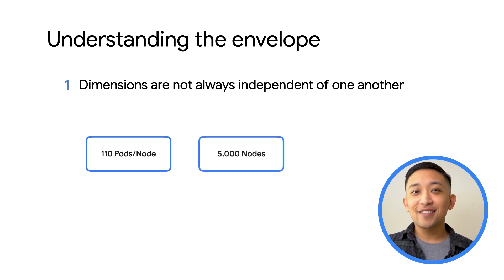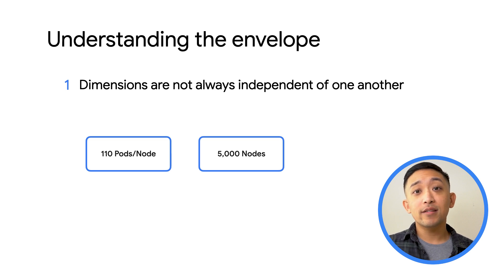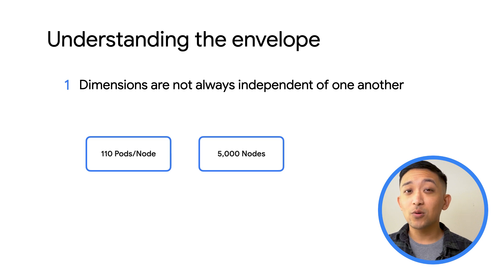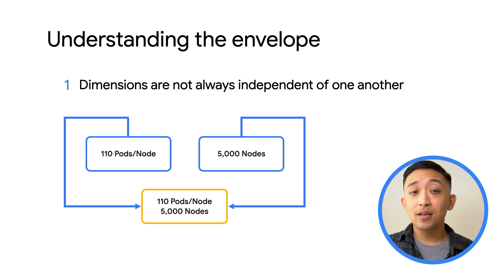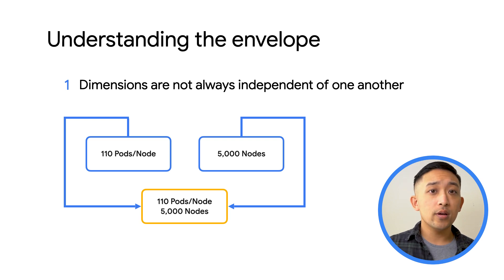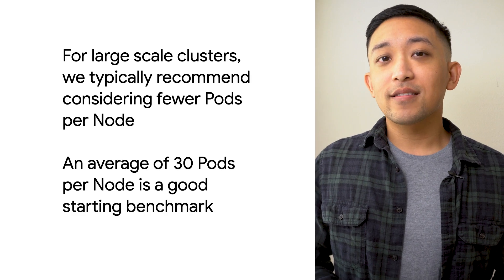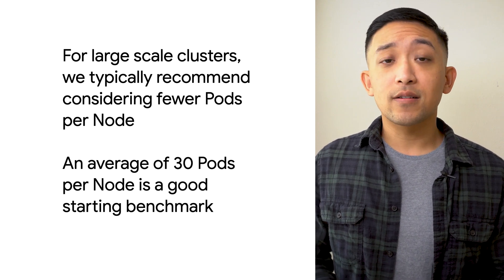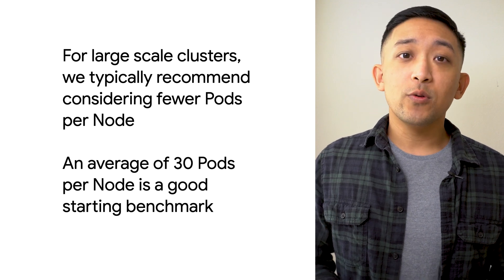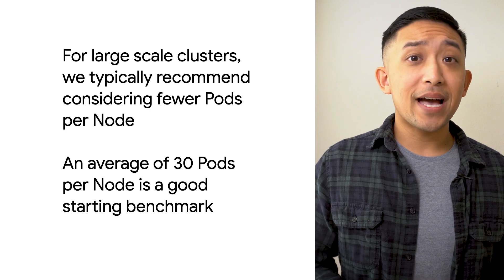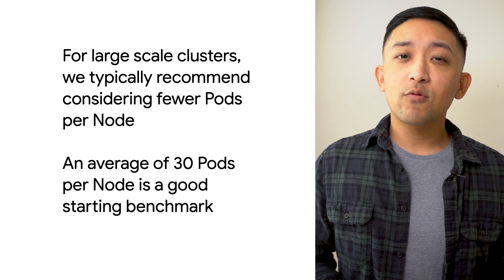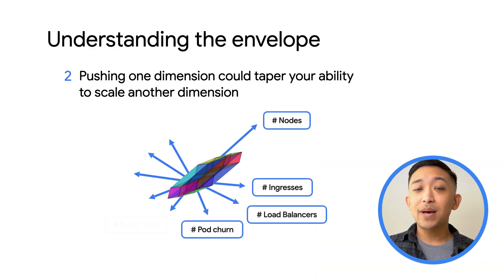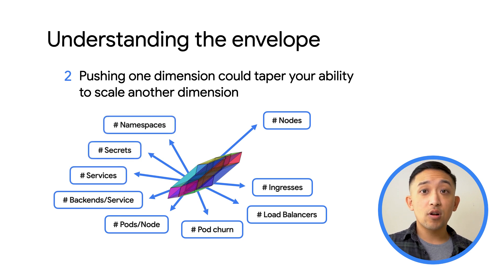In the envelope of Kubernetes scalability, dimensions are not always independent of one another. For example, in Kubernetes we have the ability to run 110 pods per node, and we're also able to run thousands of nodes in a given cluster. But doing both at the same time would likely result in an unreliable cluster, as we are stretching multiple dimensions too far — pods per node, nodes, and total pods in the cluster. Knowing how these dimensions relate to one another can help you make adjustments, like changing the maximum number of pods per node. In GKE, for large-scale clusters, we generally recommend considering fewer pods per node than the maximum. A good starting benchmark seen with successful users is roughly 30 pods per node.